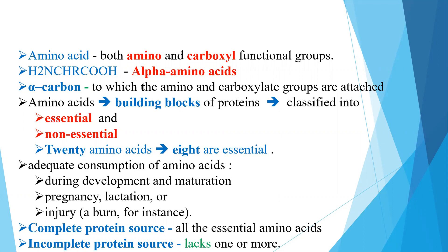There are basically 20 total amino acids, out of which eight are essential and two are semi-essential amino acids. Adequate consumption of amino acids is very essential not only during development and maturation, but also in different physiological conditions like pregnancy and lactation, and during injury. Essential amino acids must be present in the food. A protein source which contains all essential amino acids is known as a complete protein source, whereas an incomplete protein source lacks one or more essential amino acids.